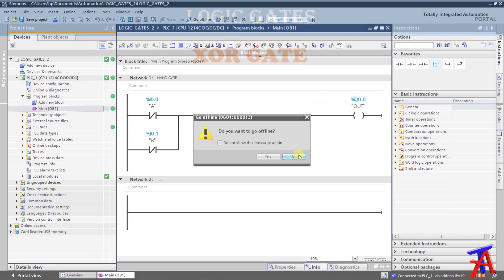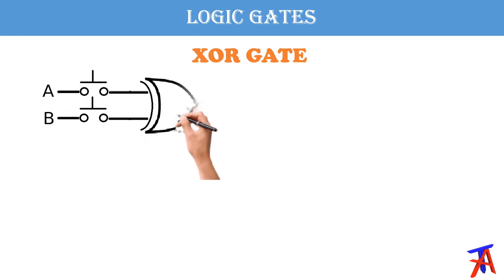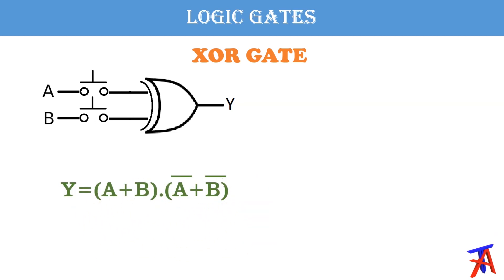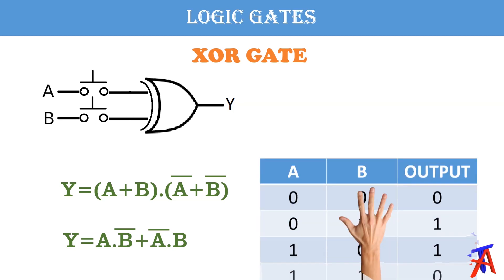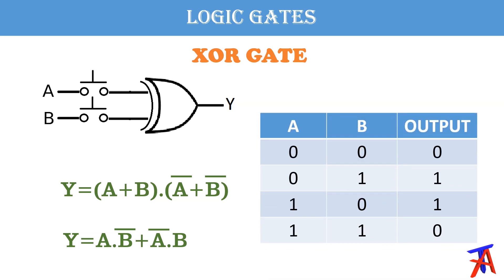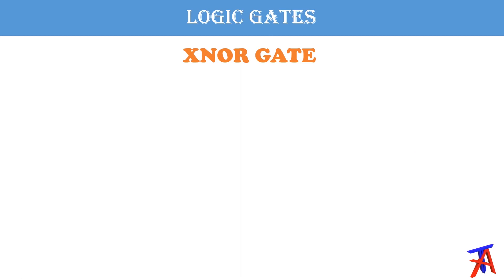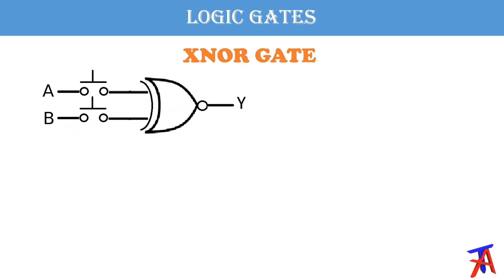Let's discuss our next gate, which is the XOR gate. This is the diagram of the XOR gate, which has two inputs and one output. Here is the formula: y equals a plus b dot a-bar plus b-bar, and if we solve it, we can also write it as y equals a dot b-bar plus a-bar dot b. Looking at the truth table of the XOR gate: if both inputs are 0, output will be 0. If any one input is 1, output will be 1. And if both inputs are 1, output will be 0.